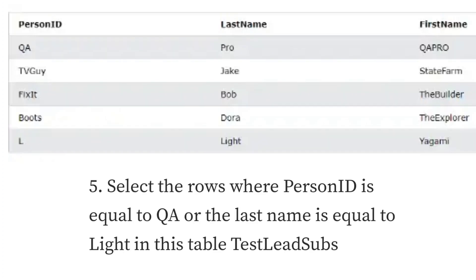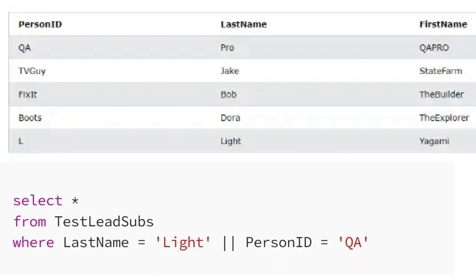Number 5: select the rows where person ID is equal to QA or the last name is equal to Light in this table, test lead subs. The answer for that would be: SELECT * FROM test_lead_subs WHERE last_name = 'Light' OR person_id = 'QA'.